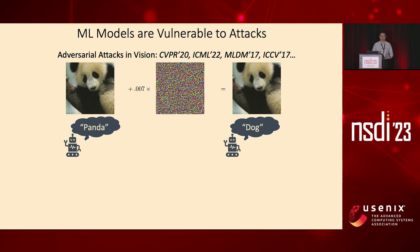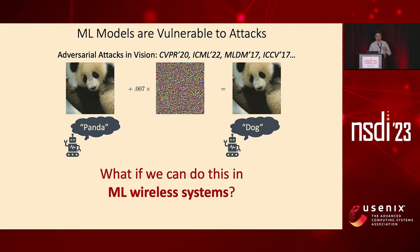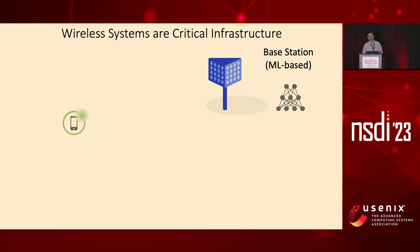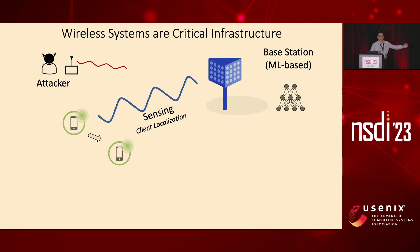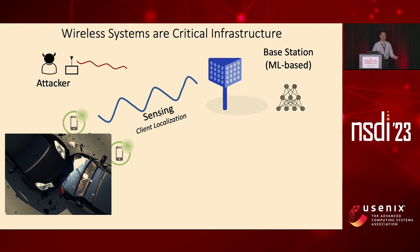Past work has already shown a lot of interest in disrupting machine learning models like this. This raises an important question: what if we can do this in machine learning wireless systems? Imagine there's a base station augmented with a machine learning model to conduct user location prediction by sensing the environment. What we want to do is design a simple attacker that can transmit a small amount of noise that will completely disrupt this machine learning model's prediction, such that user location will be predicted wrongly. Imagine applying such attacks on autonomous driving, which has already been deployed in industry — this will lead to threats to human safety and economic loss.